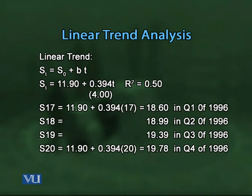In the linear trend analysis we assumed that growth per period B increases by a constant amount. In this case, the constant amount is the consumption of electricity. However, it is quite possible that the data does not fit a linear trend model. In that case we use another model called the growth trend model, which assumes the data changes by a constant percentage rather than a constant dollar amount.